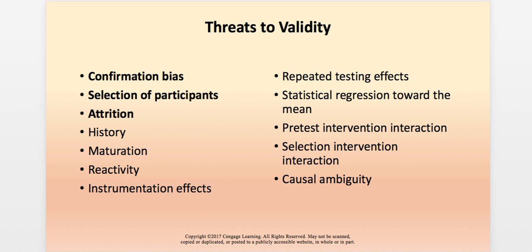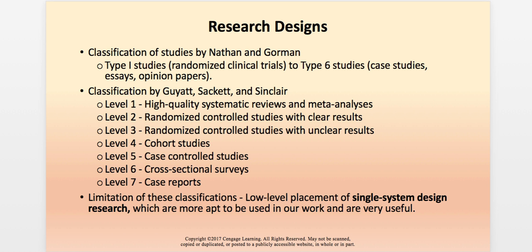There are different kinds of threats to internal and external validity when we conduct scientific research. These include confirmation bias, how we select participants, reactivity, repeated testing effects, and the ambiguity of causes. Going into these in great detail is really beyond the scope of this particular class, but Kornoyer does talk about these, and I'd encourage you to take a closer look at that in your reading.